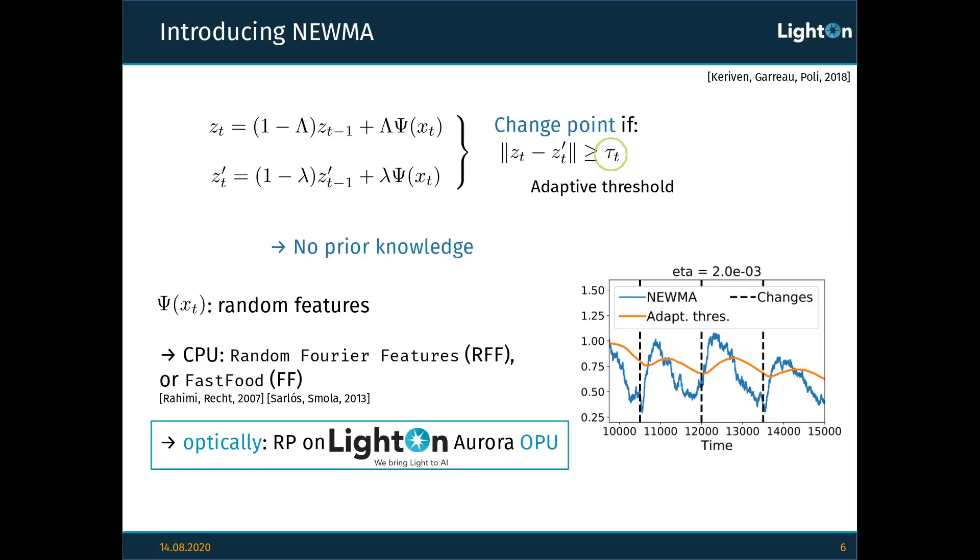To remedy this issue, the authors of the Neuma paper introduced the following idea. Instead of computing just one statistic, we compute two of them with different forgetting factors, and we say that there is a changepoint if the difference between these two statistics becomes larger than a certain threshold that is calculated adaptively. Moreover, the authors also give ways to calculate these forgetting factors and this adaptive threshold according to heuristics that will always be well-defined for a given data set. Because of that, this method required no prior knowledge of the data set, which is where the N comes from in Neuma.